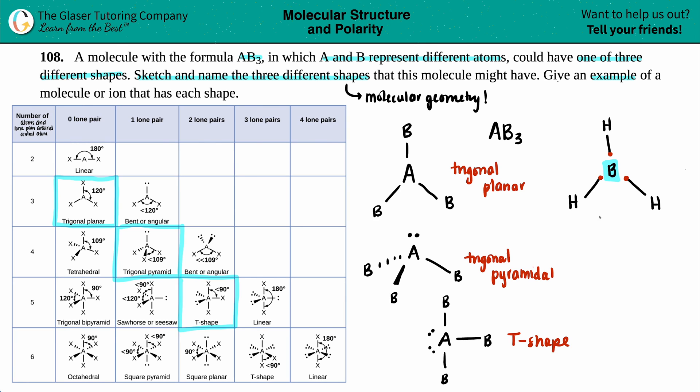That's fair game. This is BH3. So that works perfectly. BH3 would have trigonal planar molecular geometry, and that's the example for this one.